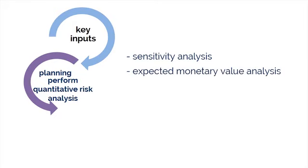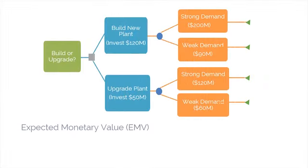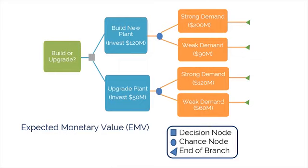Second, Expected Monetary Value, or EMV, is a statistical concept that calculates the average outcome when the future includes scenarios that may or may not happen — that is, analysis under uncertainty. A common use of this type of analysis is a decision tree analysis, which you can see here. EMV is a ballpark figure; think of it as an average of the best and worst case scenarios. It accounts not only for the dollar figure assigned to each outcome, but also for the likelihood of that outcome occurring. To calculate EMV, multiply the dollar value of each possible outcome by each outcome's chance of occurring, or percentage, and total the results.